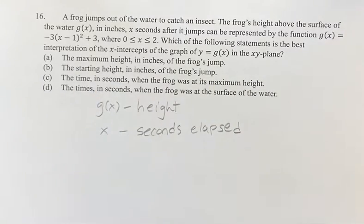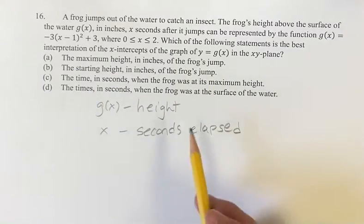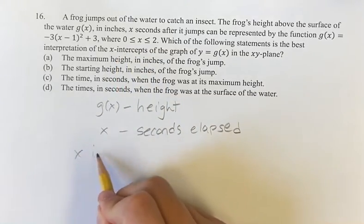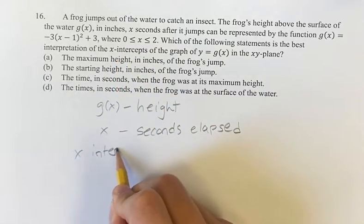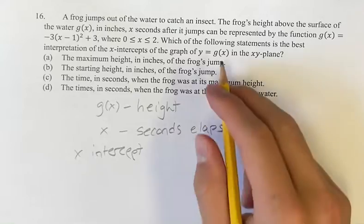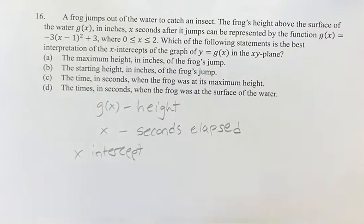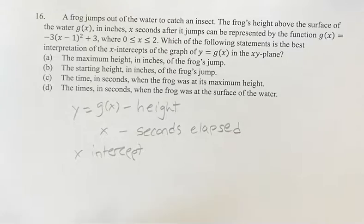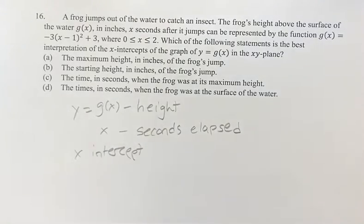We don't actually have to do anything with this equation, because what we're looking for is the interpretation of the x-intercept of the function y equals g of x. Y equals g of x represents the height, and x is the time — the seconds elapsed since the frog jumped.